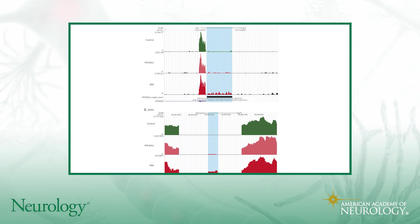Figure two looks at splicing patterns and the quantity of cryptic exons. What they're trying to measure here are inclusions of cryptic exons. The reason they're looking at this is that you and others have described in inclusion body myositis a redistribution of TDP-43 — TAR DNA binding protein. TDP-43 binds RNA and can change the splicing at these cryptic exon sites.